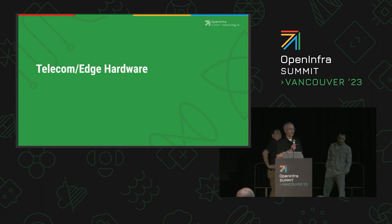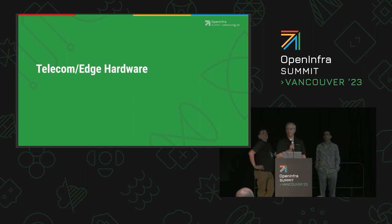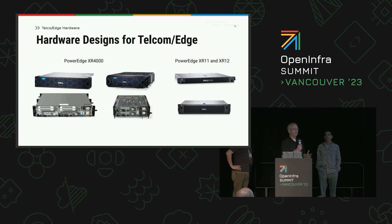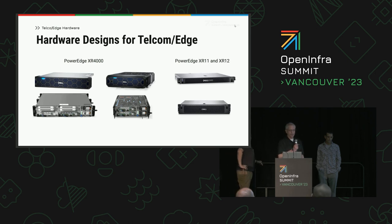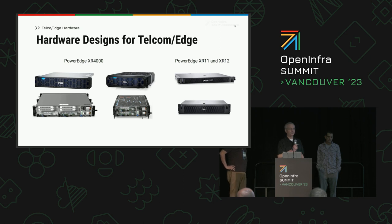Let's talk about the evolution of hardware you can use to implement telecom and edge solutions. Today you can find commercial off-the-shelf hardware from multiple vendors. From Dell Technologies, the PowerEdge XR 4000 series was recently released — it's purpose-built for telecom and edge, with a depth well-suited for telecom cabinets. On the right is the previous generation still being offered: the XR 11 and XR 12.